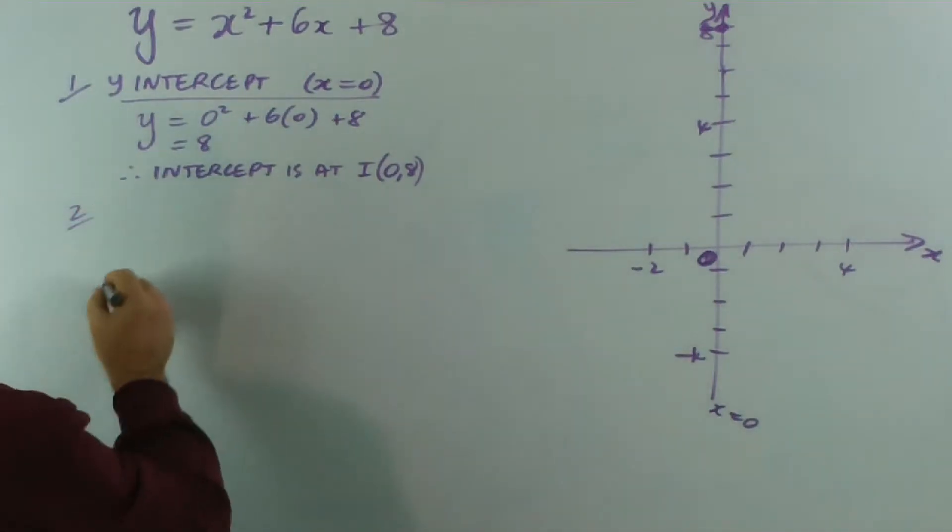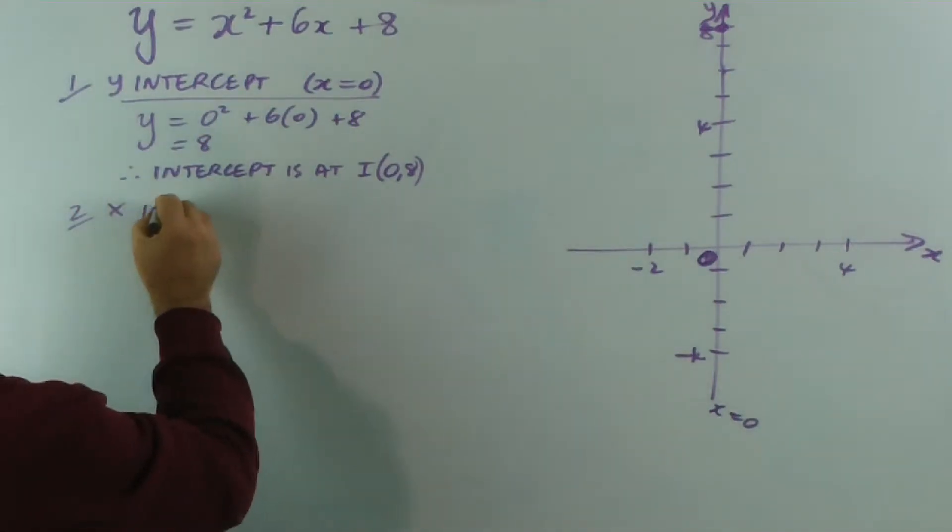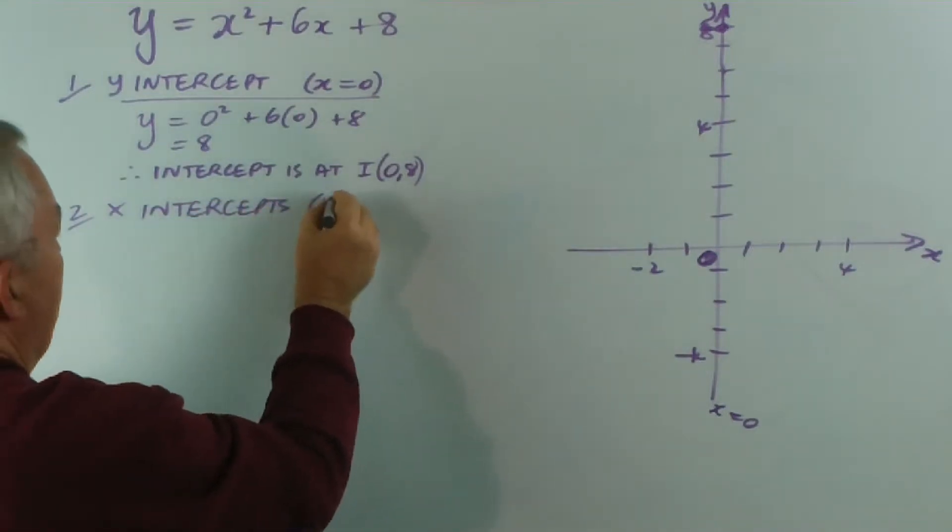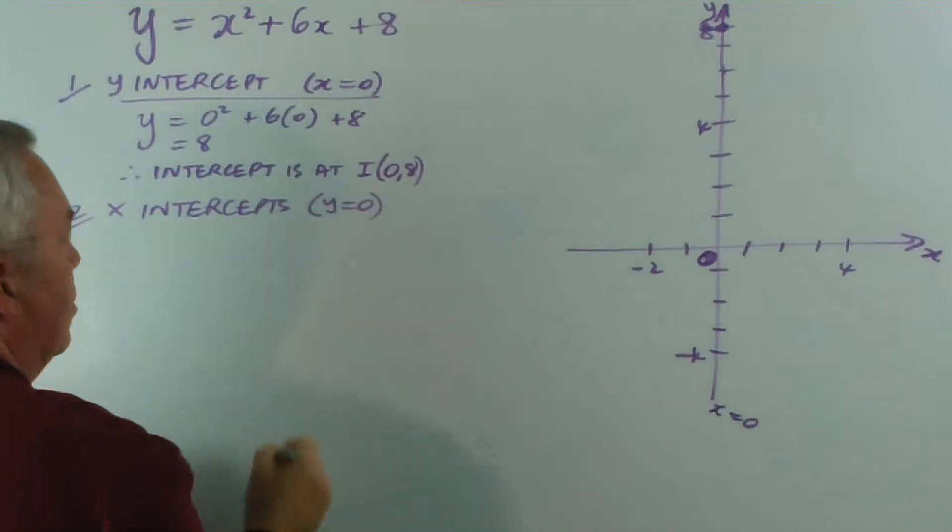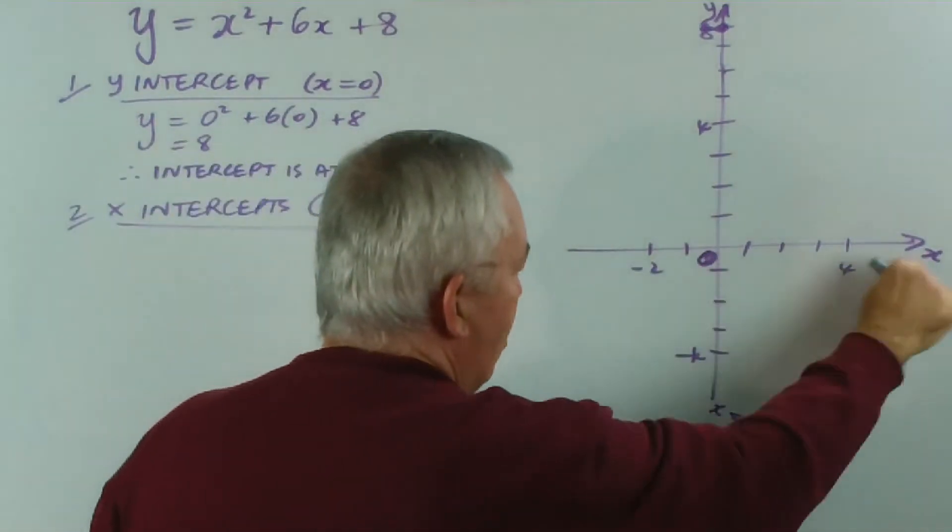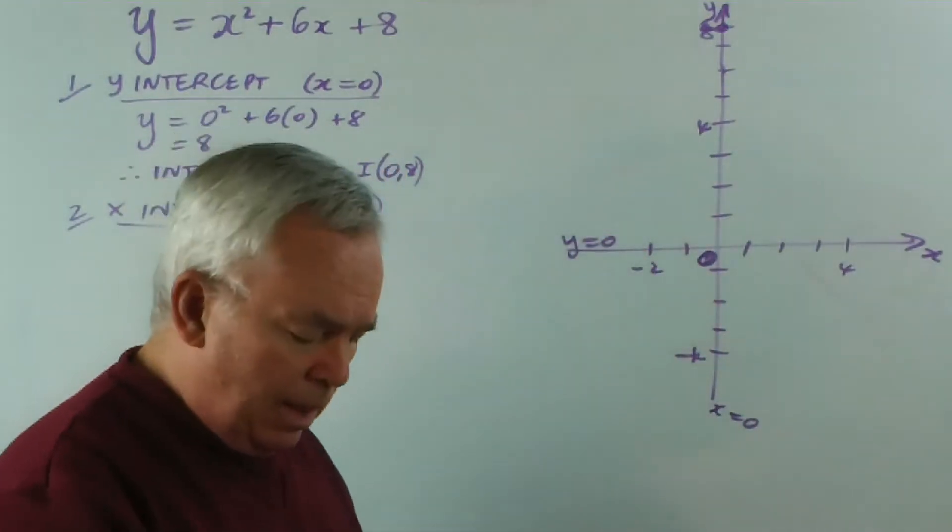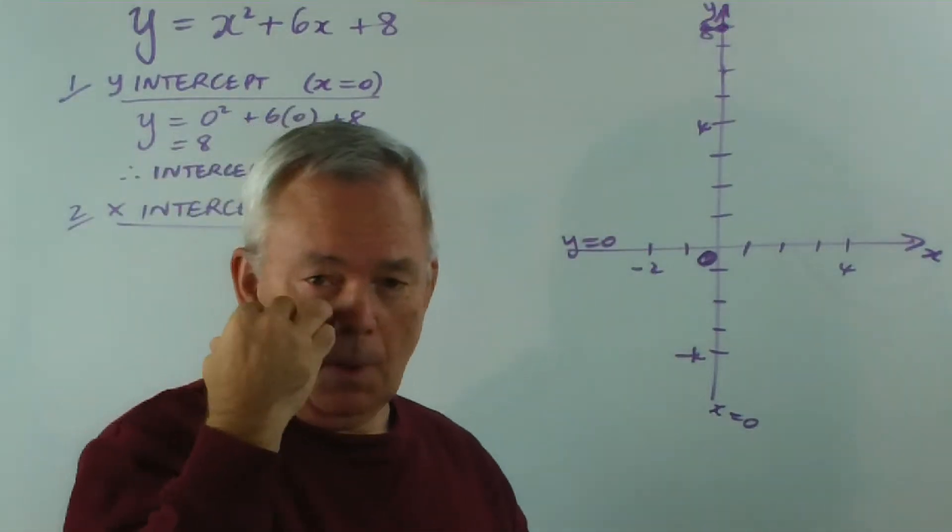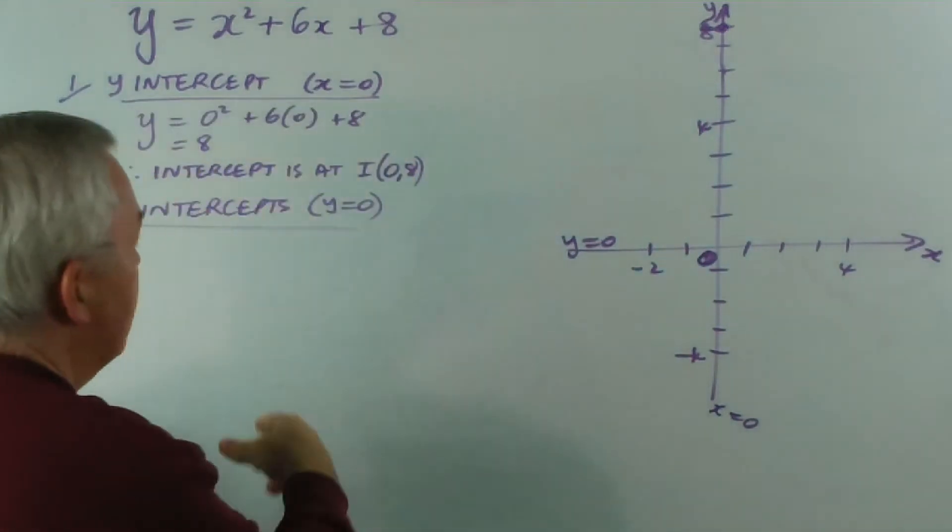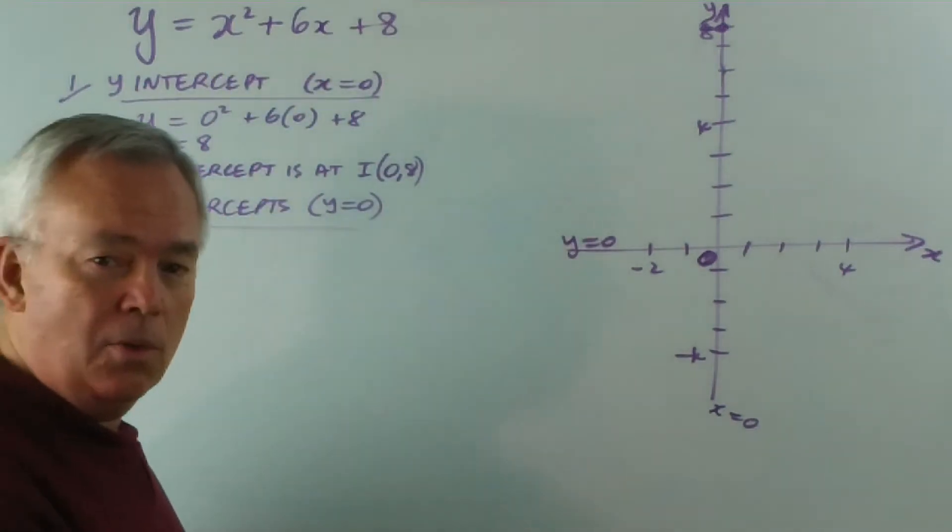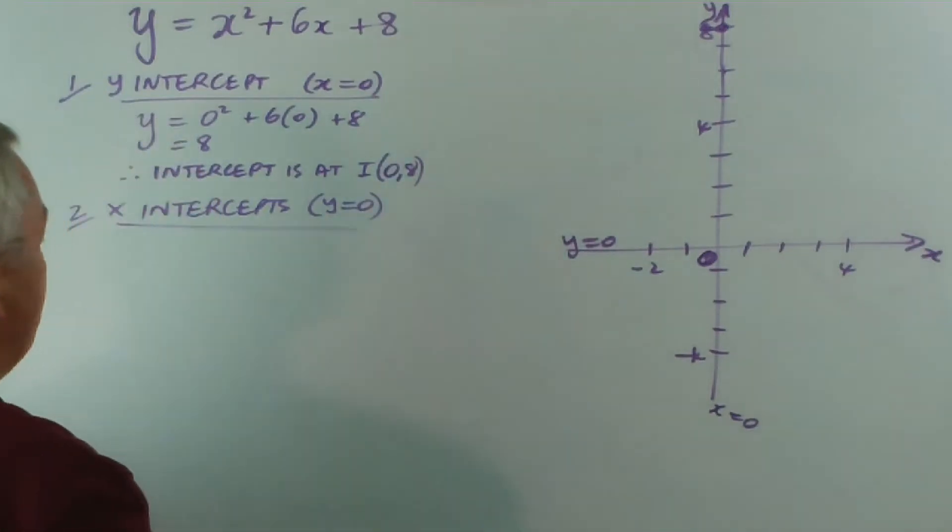Second step, finding the x-intercepts. These occur at y equals zero, because the equation for the x-axis is y equals zero. Now, the x-intercepts are located at the positions that we call the roots or the zeros of the quadratic equation. So sometimes in a heading here you can call them roots or zeros. But the x-intercepts are found this way.